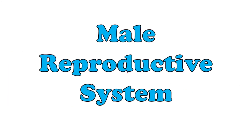There are actually two types of Reproductive System depending on the gender of a person: the male Reproductive System and the female Reproductive System. But by this time, we are going to focus first on the male Reproductive System. There are many terms we should be acquainted with in order to understand it further, so please give your full attention.